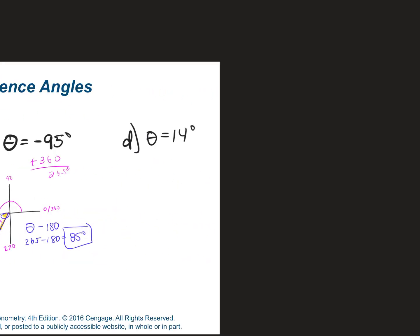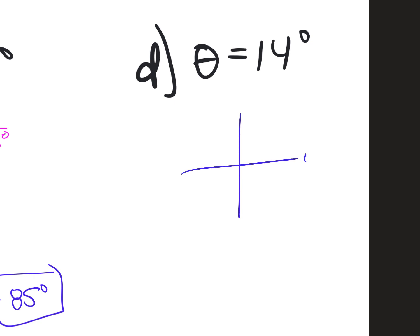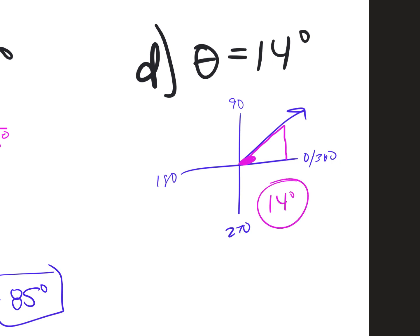Example D: θ = 14°. Where is 14°? It's in quadrant one. The Q1 rule says the reference angle equals theta, so the reference angle is 14°. You can verify: 180° − 14° = 166° (not acute), 14° − 180° = negative, 360° − 14° = 346° (not acute). You always use 180 and 360, never 90 or 270.